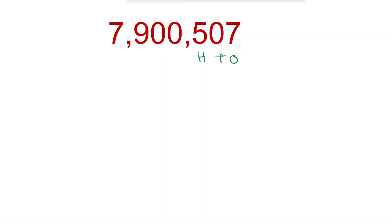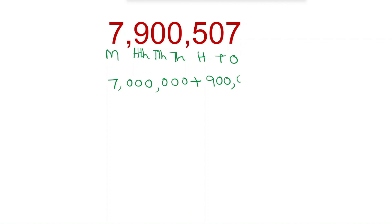First identify the places: ones, tens, hundreds, thousands, ten thousands, hundred thousands, millions. Seven million plus nine hundred thousands — the ten thousands place is zero, the one thousands place is zero, and five is in the hundreds place, so five hundred — the tens place is zero.